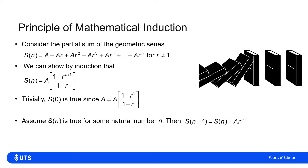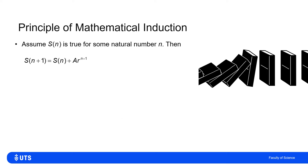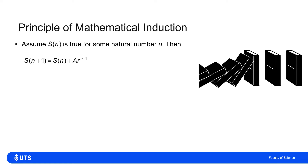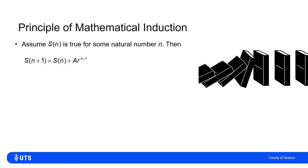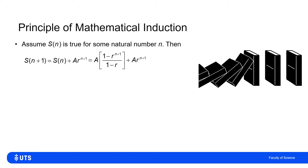We want to show that the statement S(n) + ar^(n+1) will give us what we're trying to prove — the statement for S(n+1). So we can write out what we're claiming S(n) is, plus what we're adding on for one more term: ar^(n+1). We have a common factor of a, so we can take that out.